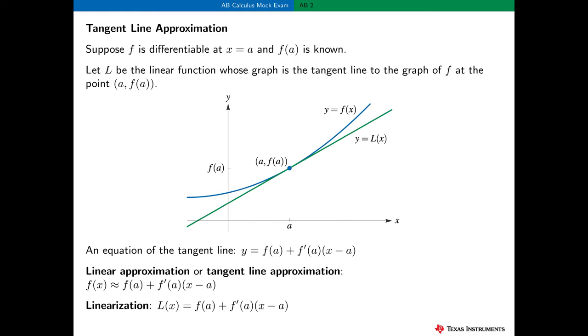Let's try to formalize this visualization. Suppose the function f is differentiable at x = a, and the value f(a) is known. Let L be the linear function whose graph is the tangent line to the graph of f at the point (a, f(a)). Here's a figure that shows the graph of y = f(x) and y = L(x). It seems very reasonable, and the graph suggests, that we can use the line tangent to the graph of f at (a, f(a)) as an approximation to the graph of y = f(x) when x is near a.